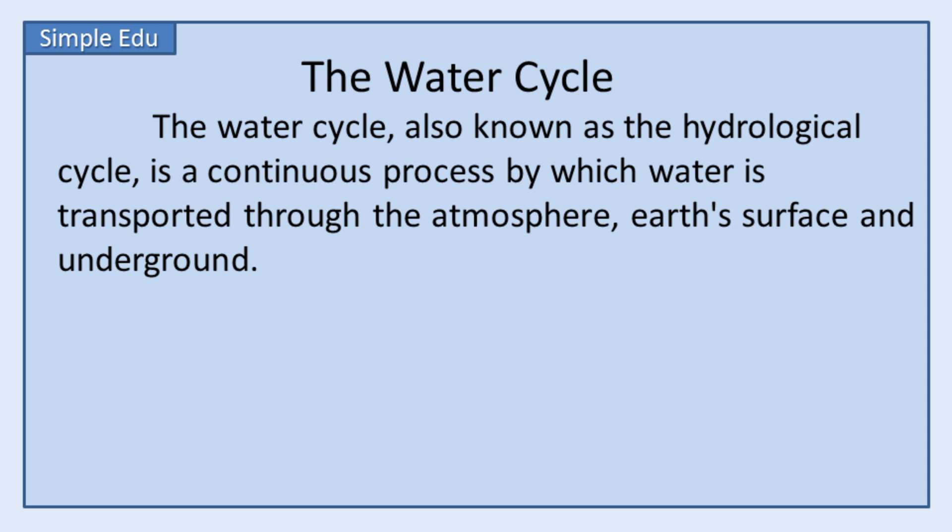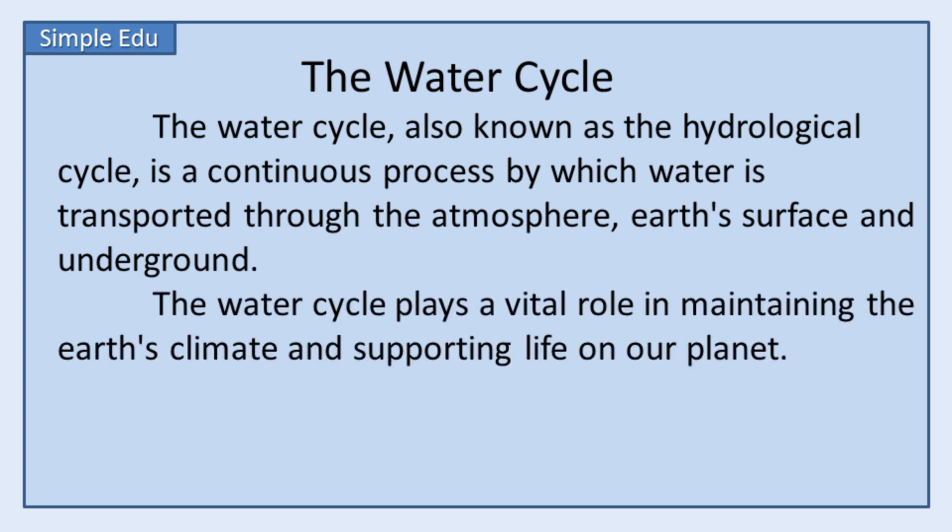The water cycle, also known as the hydrological cycle, is a continuous process by which water is transported through the atmosphere, Earth's surface, and underground. The water cycle plays a vital role in maintaining the Earth's climate and supporting life on our planet.